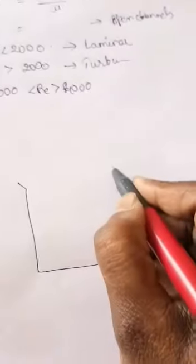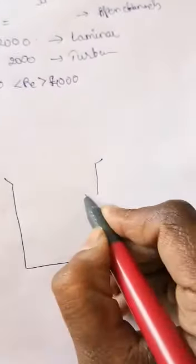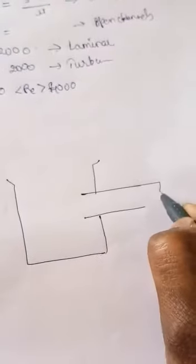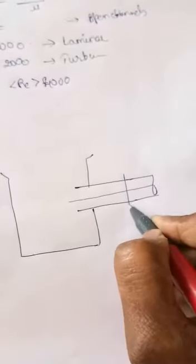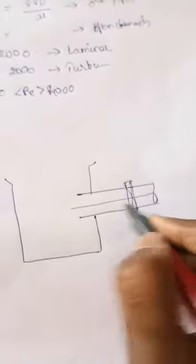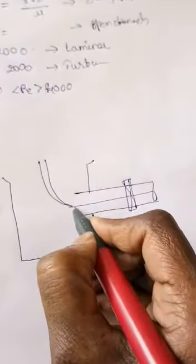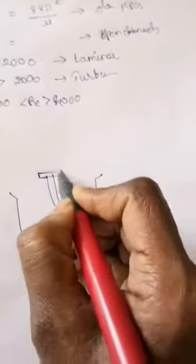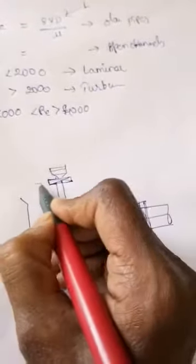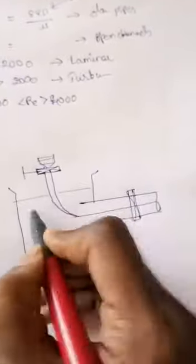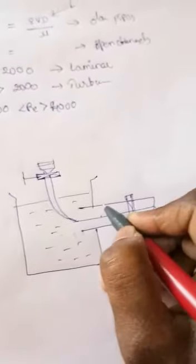If the Reynolds number is greater than 4000, that flow is called turbulent flow. With the help of the Reynolds experiment, we will see turbulent flow. I will be drawing a small diagram for explaining turbulent flow, and correspondingly I will also explain laminar flow and transition flow.